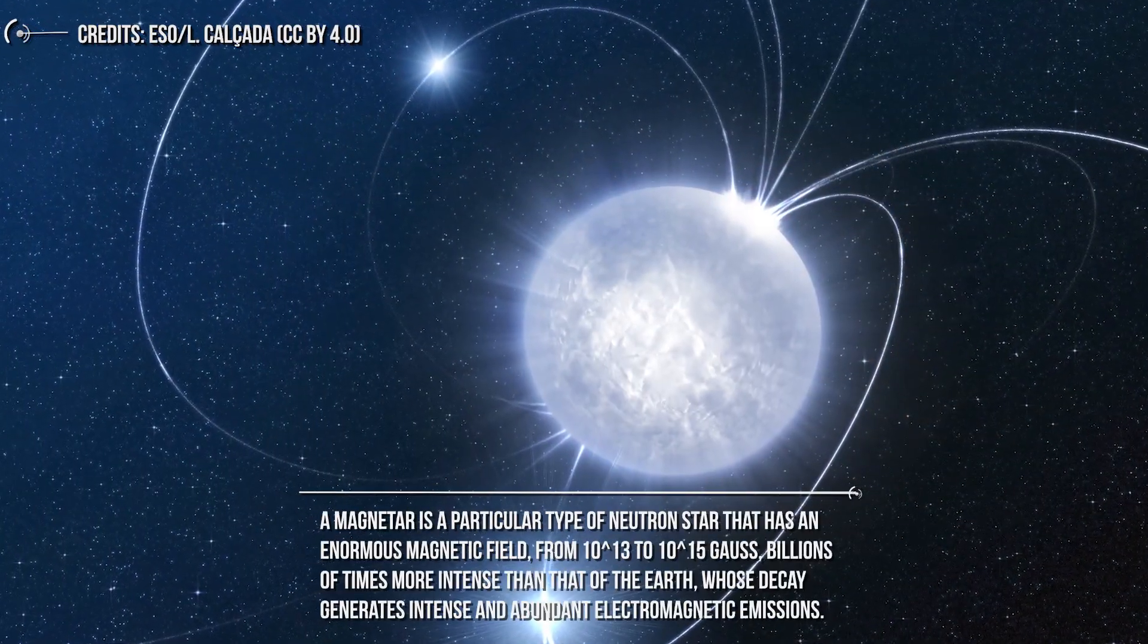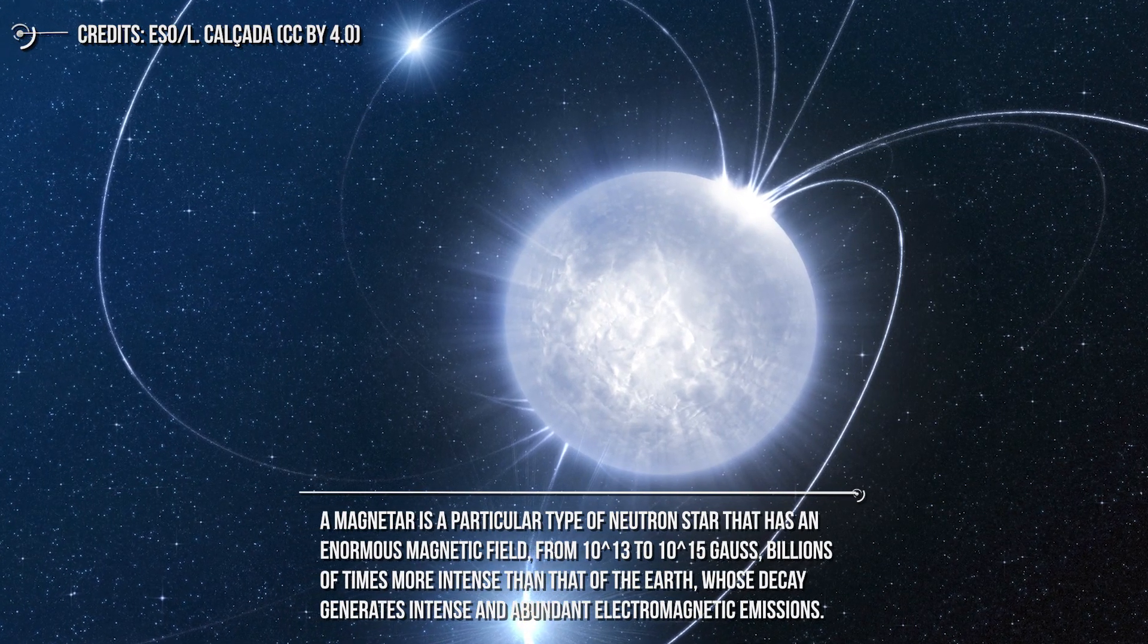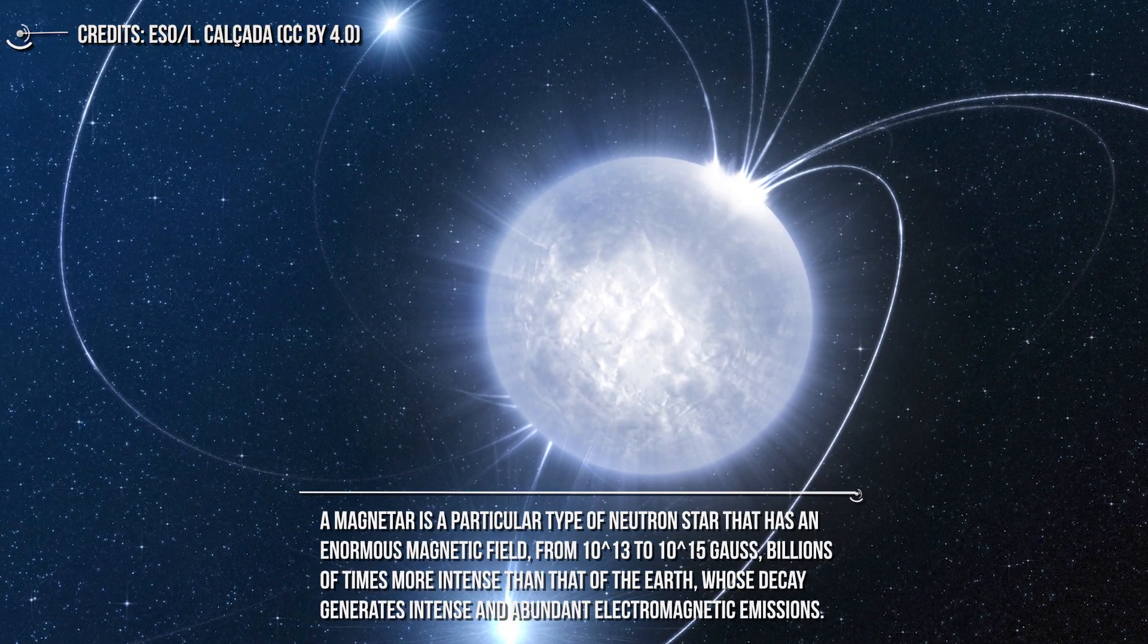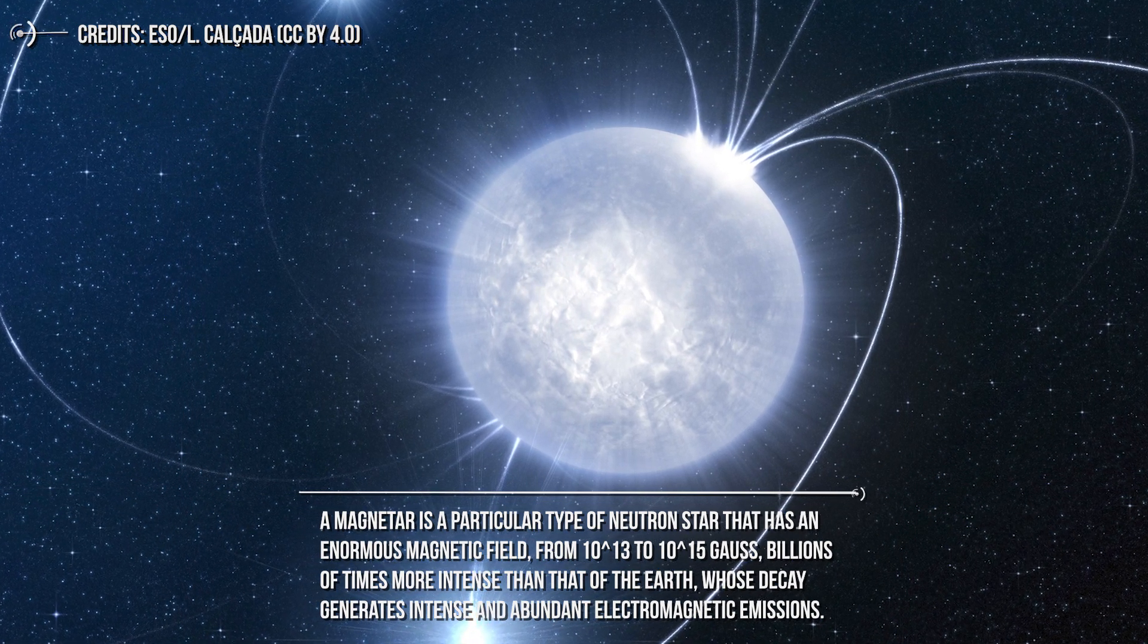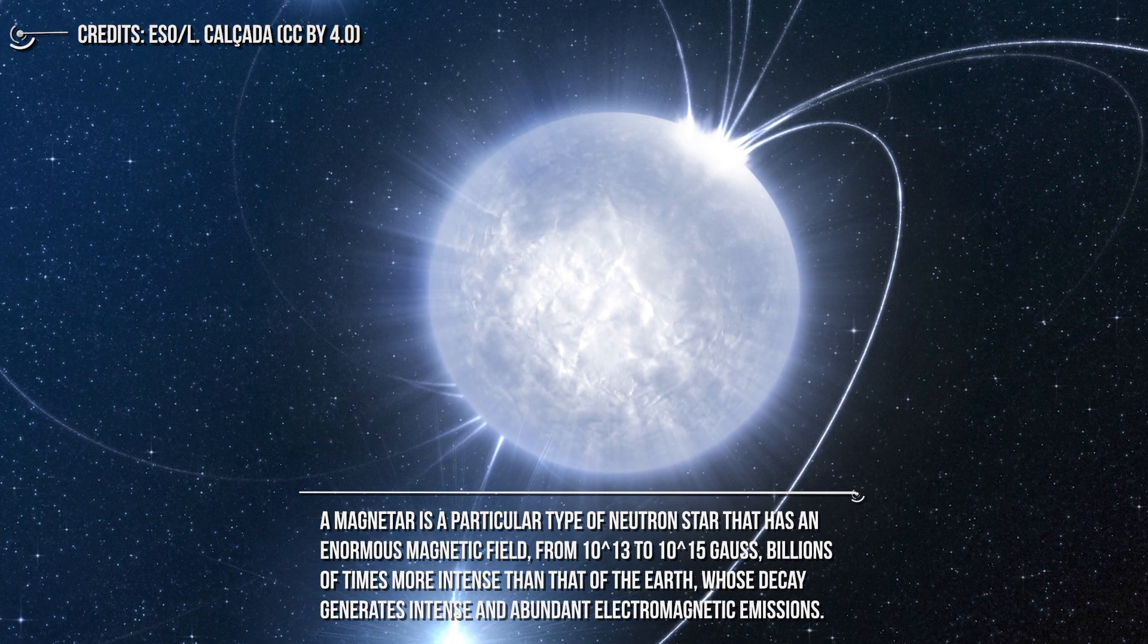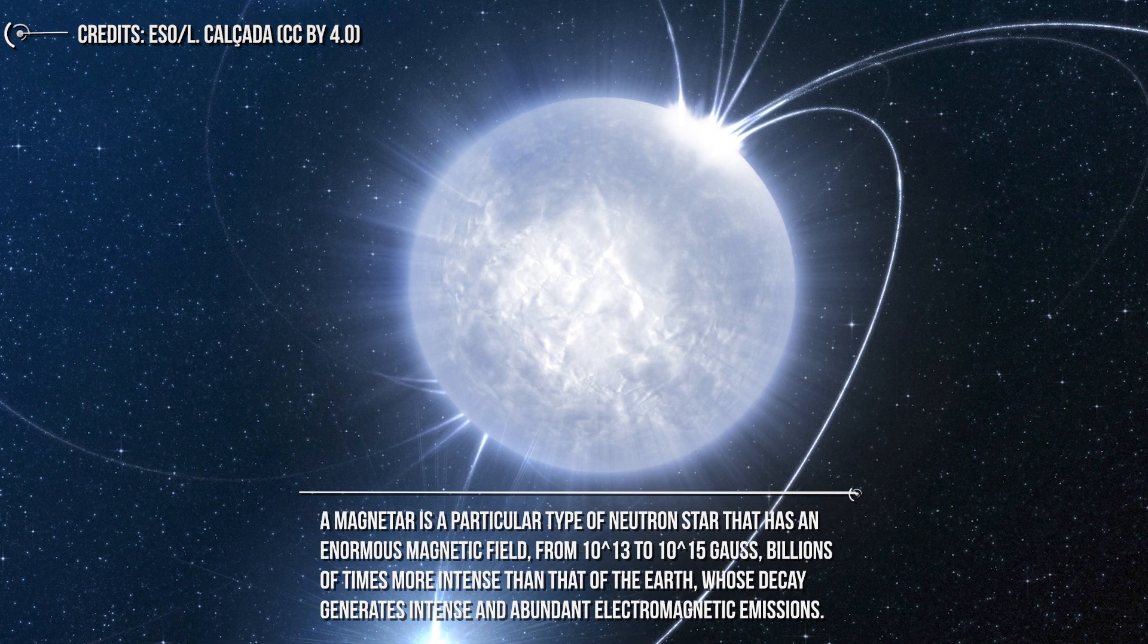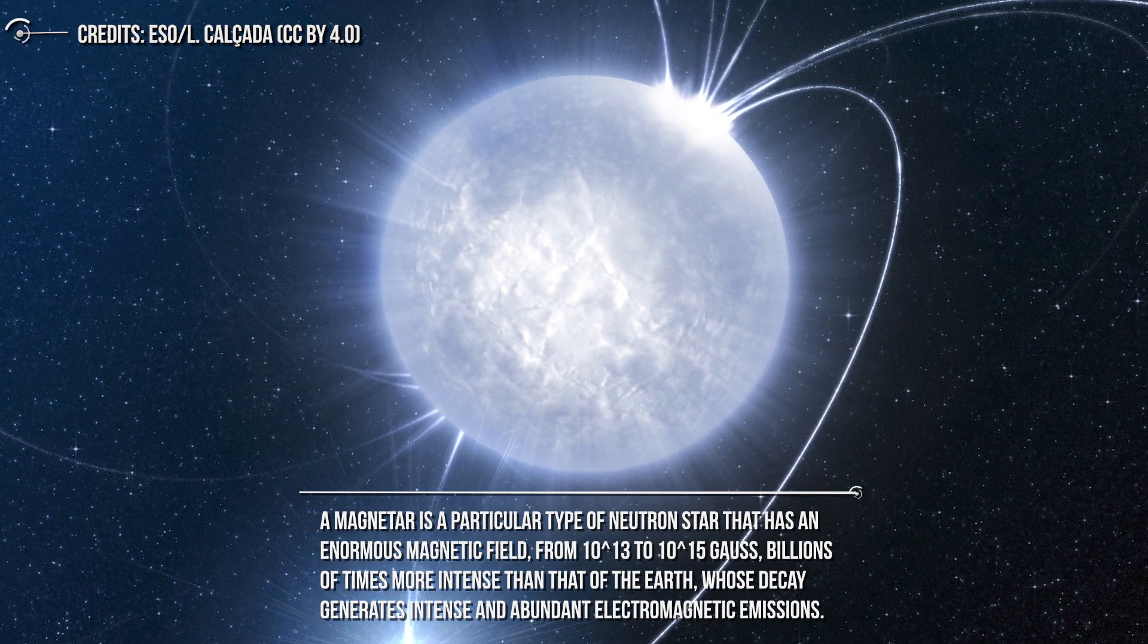A magnetar is a particular type of neutron star that has an enormous magnetic field, from 10 to the power of 13 to 10 to the power of 15 Gauss, billions of times more intense than that of the Earth, whose decay generates intense and abundant electromagnetic emissions.